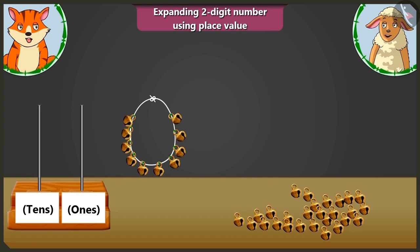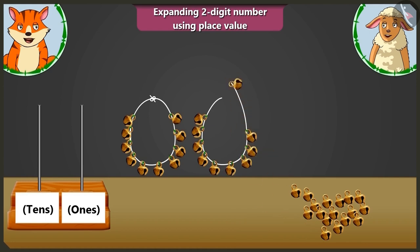Now let me count the anklet beads besides this group. One, two, three, four, five, six, seven, eight, nine and ten. Here I made the second group of ten.